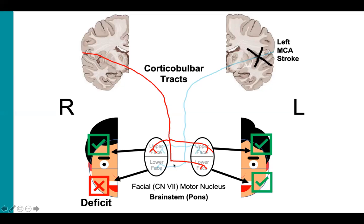Unilateral lower facial paralysis by itself tells you there is damage to upper motor neurons somewhere between the cortex and the nuclei in the pons. Unilateral upper and lower facial paralysis tells you there is damage to lower motor neurons somewhere between the nuclei and the facial muscles. In MCA strokes, the damage is to the upper motor neurons in the cortex, and only the contralateral lower part of the face will be affected, resulting in facial droop and dysarthria. Eyelid and forehead movements will be intact because the upper half of the face is not affected. This is an important distinguishing feature between an MCA stroke and Bell's palsy, because in Bell's palsy, there is paralysis of both the upper and lower face.